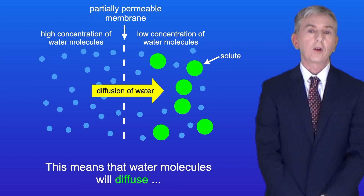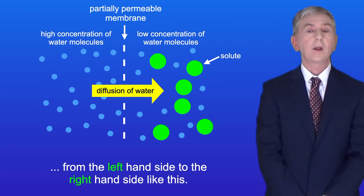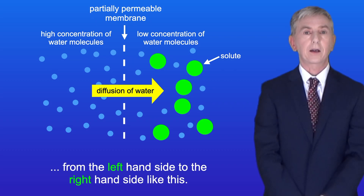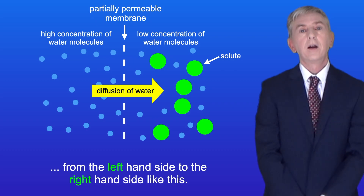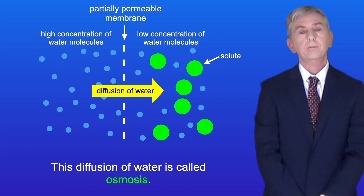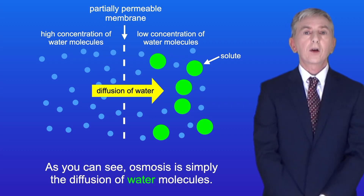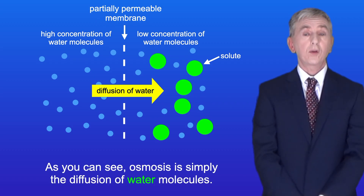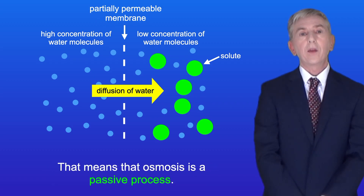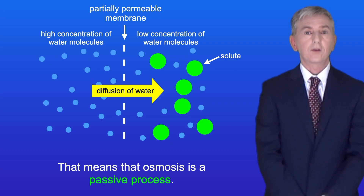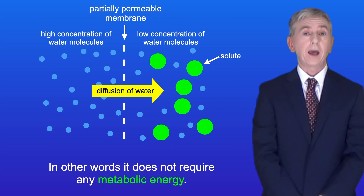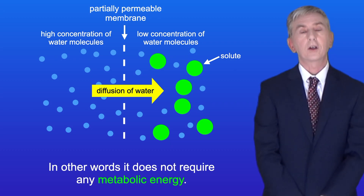So this means that water molecules will diffuse from the left hand side to the right hand side like this, and this diffusion of water is called osmosis. So as you can see, osmosis is simply the diffusion of water molecules, and that means that osmosis is a passive process. In other words, it does not require any metabolic energy.